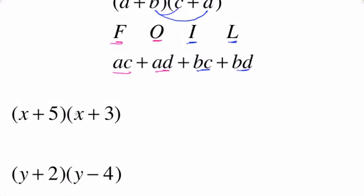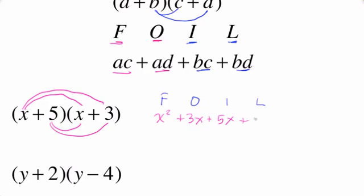Let's do some examples. When you're getting started, it sometimes is helpful to actually write out the letters FOIL, also it's helpful to draw the lines again when you're starting out. X times X is X squared. X times 3 is a positive 3X. 5 times X is a positive 5X. And then lastly, 5 times 3 is 15.